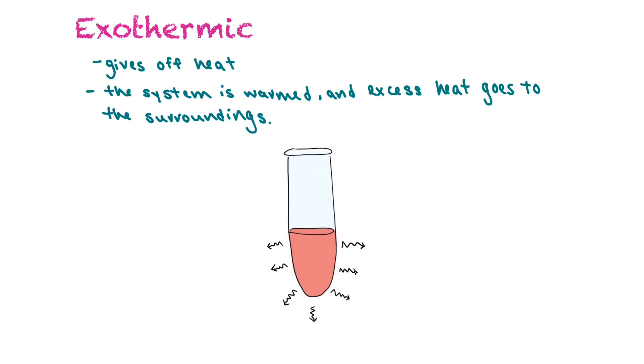An exothermic reaction gives off heat, and the system is warmed, and excess heat goes to the surroundings. So heat is released from the system.